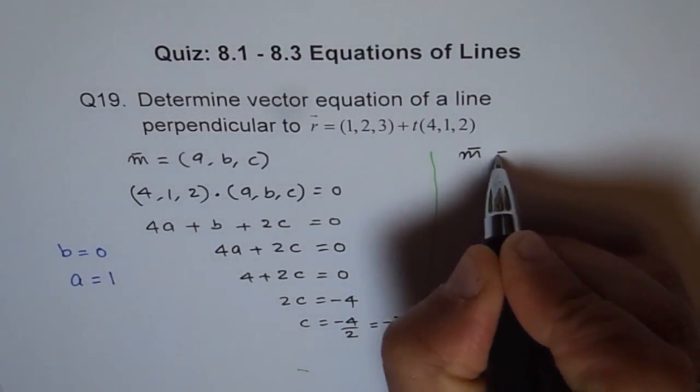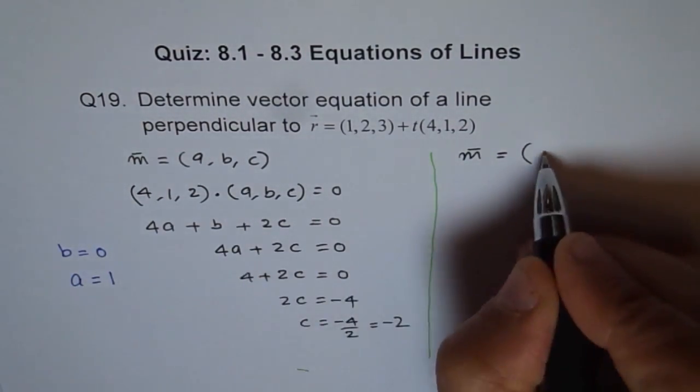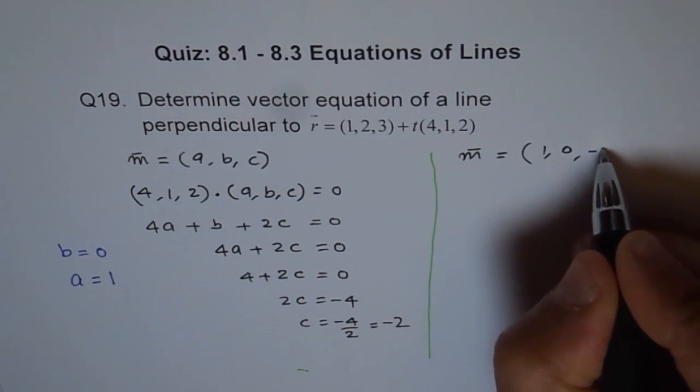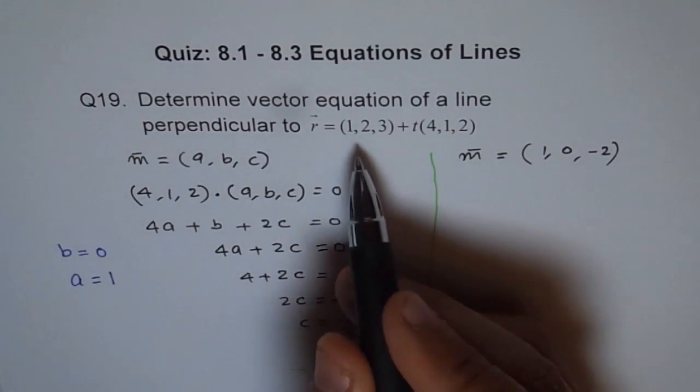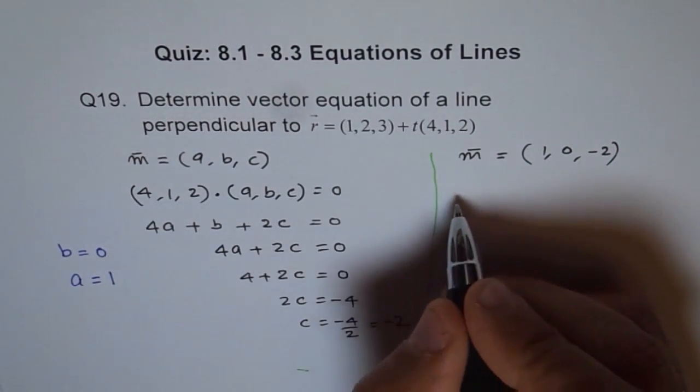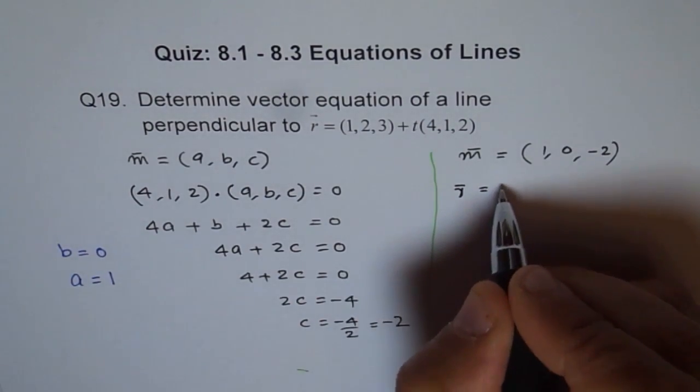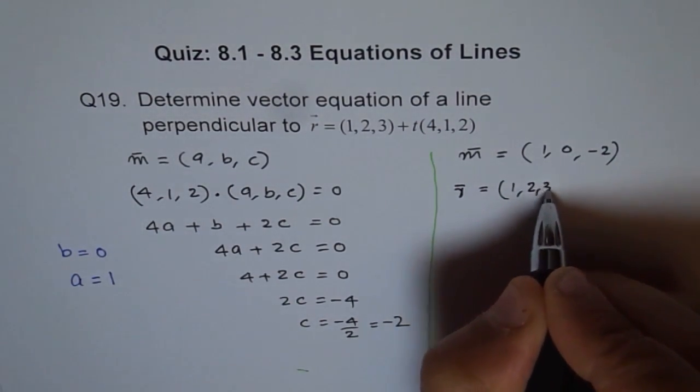What did we find here? We got these values for our ABC and therefore, our direction vector now is A is 1, B is 0 and C is minus 2. And therefore, we can use the same point. So we say, our vector equation is (1, 2, 3).